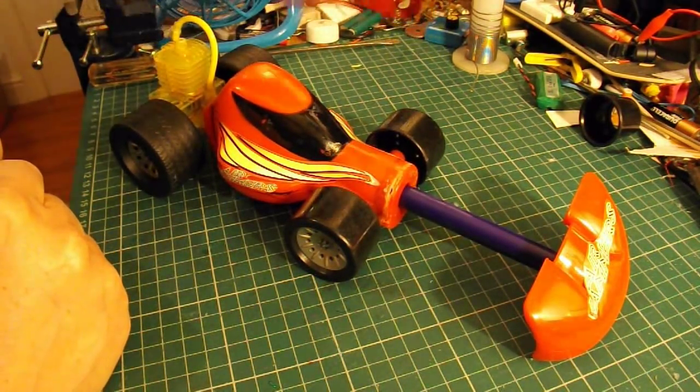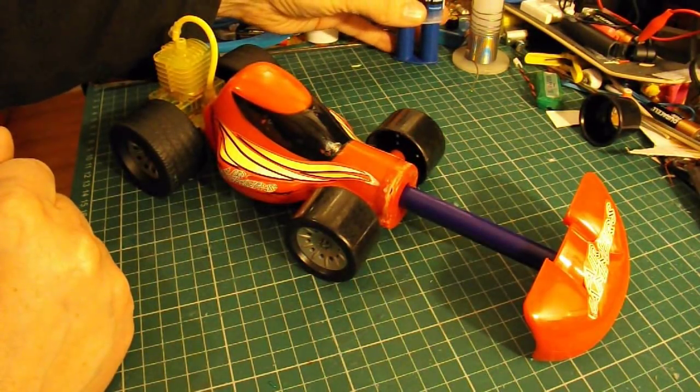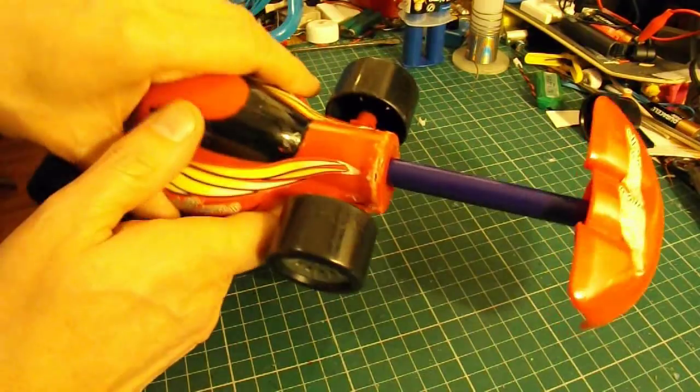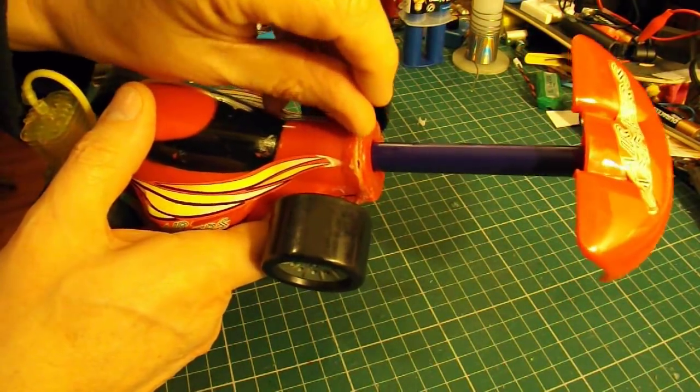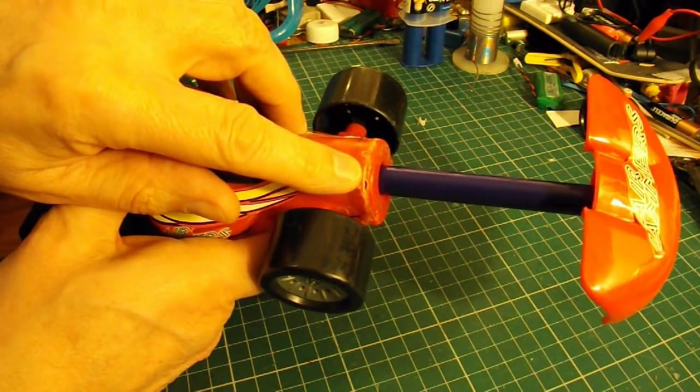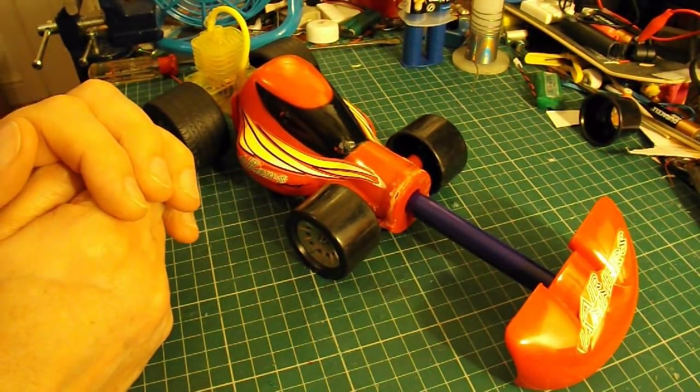I'm trying to avoid using 2-pack epoxy because I'm a bit worried that that may be a permanent fix that may still leak and we won't be able to get it apart if it does leak. So I'm still looking for alternative glues that I can use.